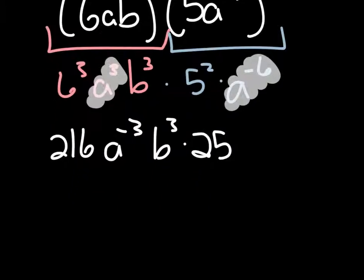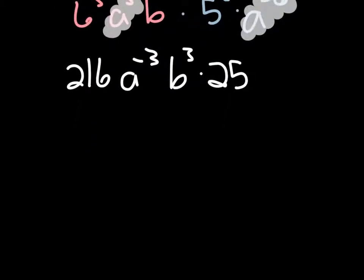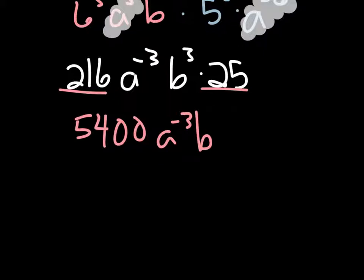So we're making progress. We have regular boring numbers, 216 and 25. Those can be multiplied together. Those two multiplied together are 5,400. A to the negative 3rd b cubed.